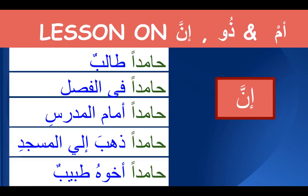The noun which Inna gives mansoob — the ismu Inna — may not be immediately after Inna. We have learned that jar majroor shibhu jumla khabar or zarf jumla khabar can come early as a khabar muqaddam, making the ismu Inna a mubtada mu'akhkhar, in which case the ismu Inna will be far further behind. Let me give you some examples from the Quran.